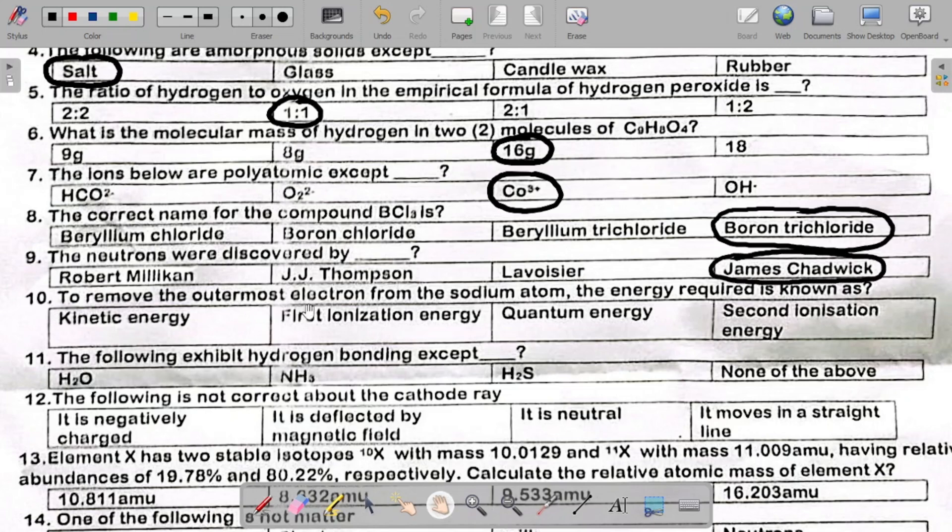Number 10 says to remove the outermost electron from the sodium atom, the energy required is known as. The answer there is the first ionization energy. So please do your circling better. Just circle this as first ionization energy.